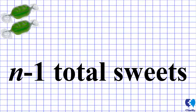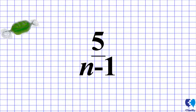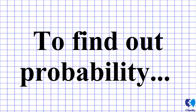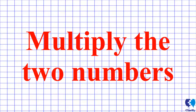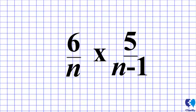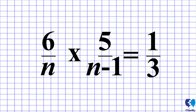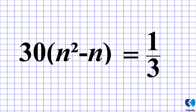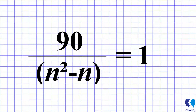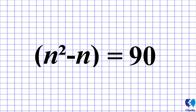This means that the probability of the second sweet being orange is 5 over n minus 1. To find the probability of Hannah eating two orange sweets, you multiply the two numbers together, giving 6 over n multiplied by 5 over n minus 1. The question states that the probability of two orange sweets is one third, so you rearrange: 6 over n multiplied by 5 over n minus 1 equals one third, which simplifies to 30 over n squared minus n equals one third, then to 90 over n squared minus n equals 1, and therefore n squared minus n equals 90.